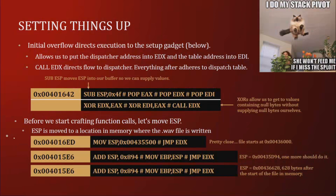Setting things up: we have the initial overflow, then set up the dispatcher gadget using CALL EDX. We do some XOR operations and provide values for EDX and EDI — the dispatcher gadget and dispatch table addresses. After calling EDX, we move ESP to a known location to simplify things, then call the API functions, setting up VirtualProtect with the necessary parameters, and dereferencing the VirtualProtect pointer for use later.